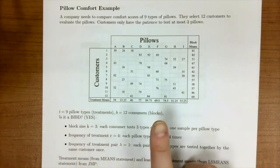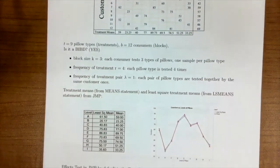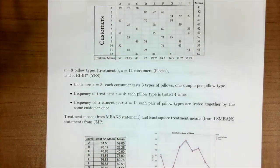So our treatments are our pillows where t is 9. Our block is our customer, so b is 12. And the question we want to ask ourselves is, is this a balanced incomplete block design? And again, it is. But let's try to figure out what our k, our r, and our lambda are.